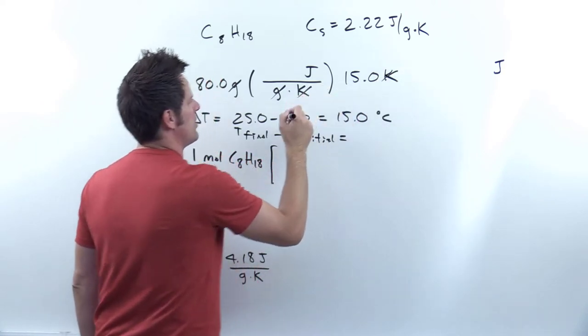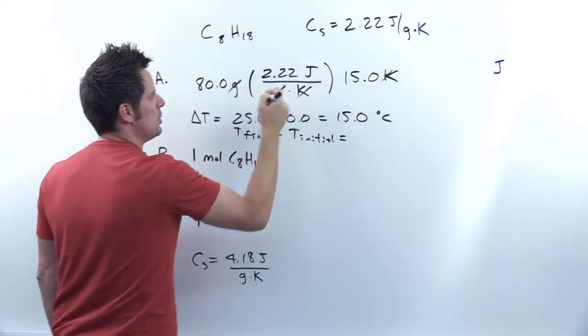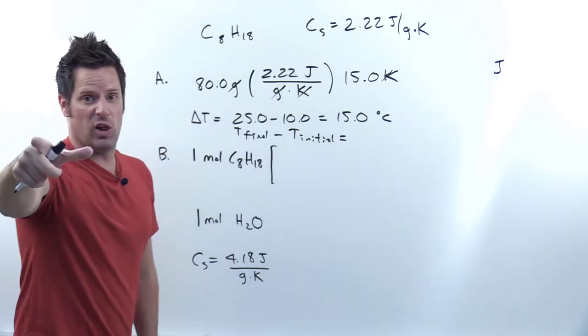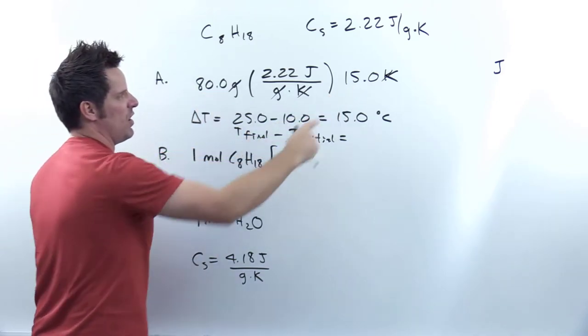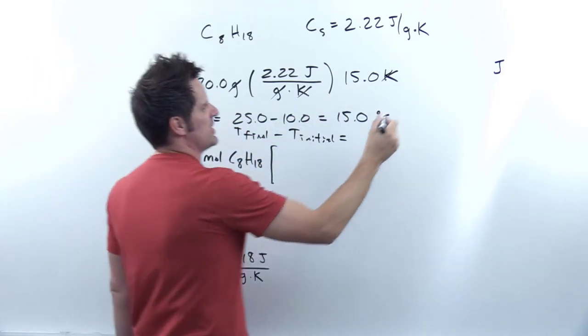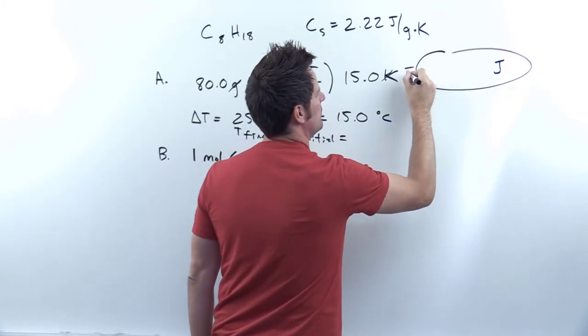My kelvins then cancel each other out. And I'm going to insert this number right here, 2.22 joules. So from here then, I'll let you do the math. You just multiply the stuff at the correct number of significant figures, and you're left with the answer in units of joules.